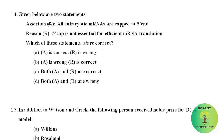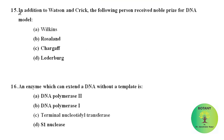Given below are two statements — assertion: all eukaryotic mRNAs are capped at the 5' end — this is a correct assertion. Reason: the 5' cap is not essential for efficient mRNA translation — this is incorrect. So only the assertion is correct and the reason is wrong. In addition to Watson and Crick, Wilkins also received the Nobel Prize for the DNA model.